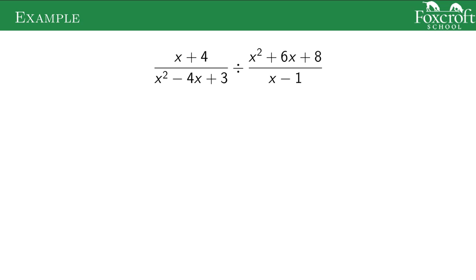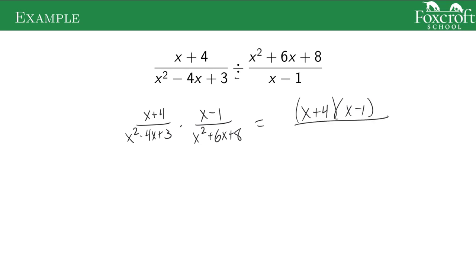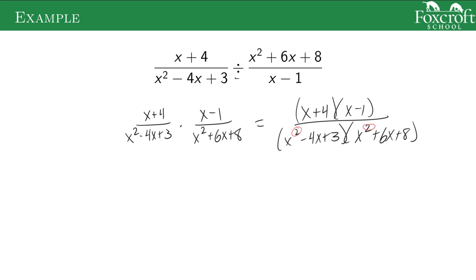Here's another example. We're dividing, so the first thing we do is change the division problem to a multiplication problem, then flip the second fraction. When I multiply them together, I multiply across the top and across the bottom. This is technically the correct answer as a single fraction, but we want to simplify. To simplify, we need to break everything down to its smallest pieces. The top is already done — just single x's. At the bottom we have two quadratics, so we can factor those.